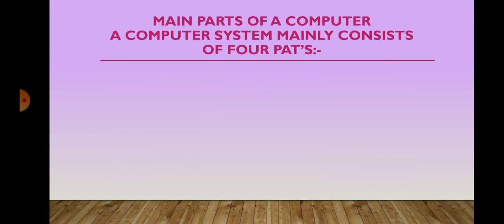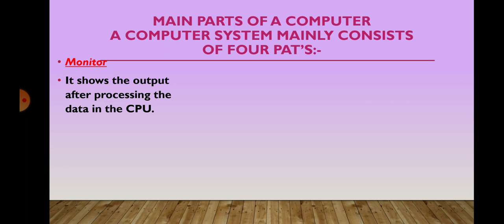A computer system mainly consists of four parts: monitor, CPU, keyboard, and mouse. We will see all of these four parts one by one. The first one is monitor. Monitor is a very common output device. It looks very much similar to a TV screen. It shows the work being done by the computer.